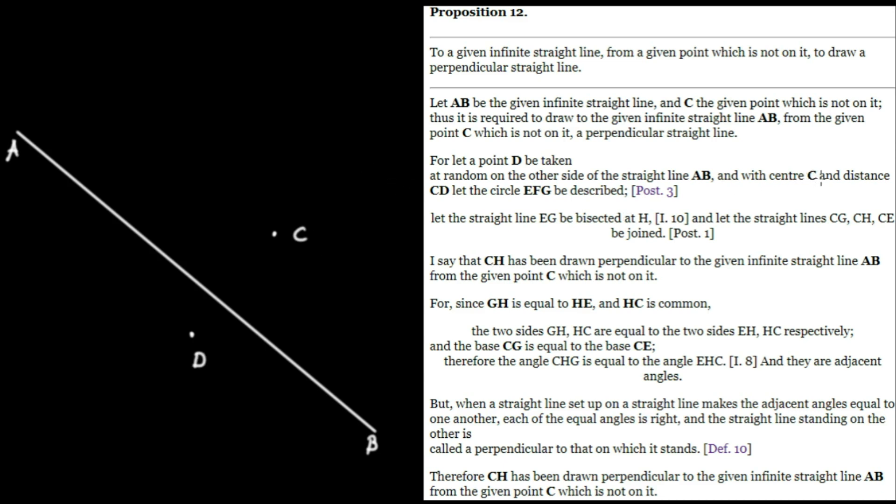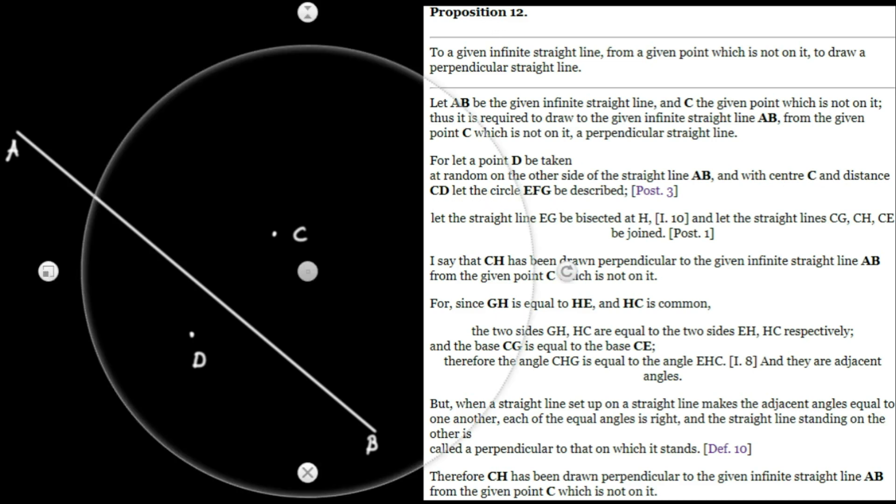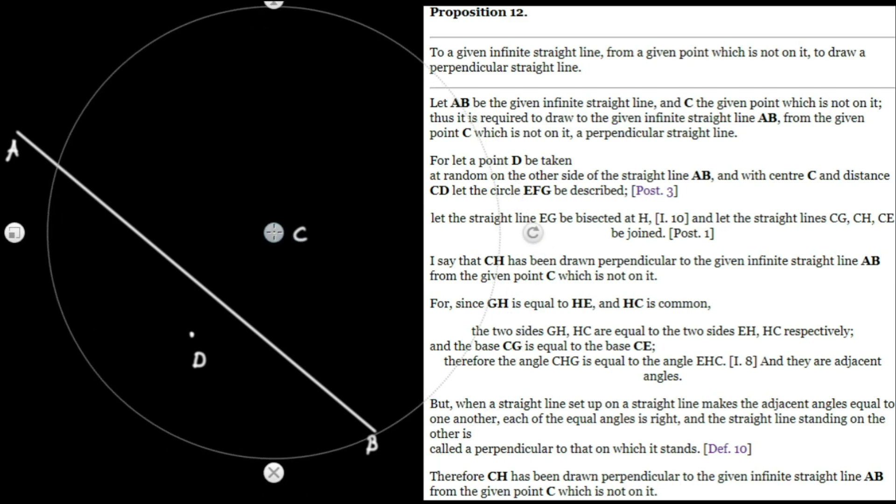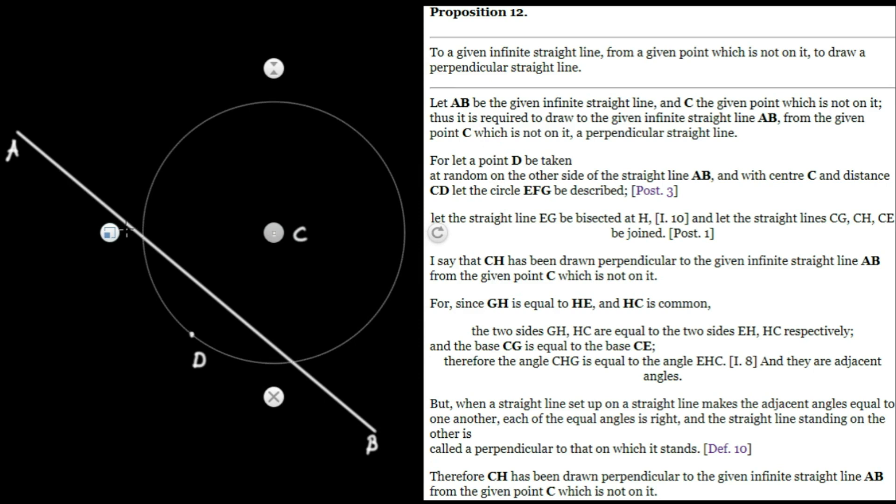And with center C and distance CD, let the circle EFG be described. We have our center C, place the center of our compass right there at C, and our radius will be CD. So we'll sweep out that circle. For labeling purposes, we're going to call this intersection over here E, call this one G, and the circle F.